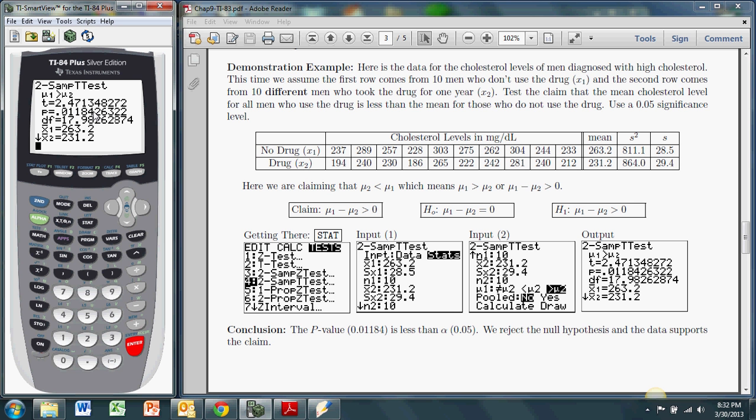All right. And so what that means, if you look at the p-value, 0.01184, since we used a 0.05 significance level to conduct this test, our p-value is below that. It's 0.01 with some change, so it's smaller than the significance level. And we reject the null hypothesis. And the data supports our claim that the mean cholesterol level for all men who use the drug is less than the mean for those who do not.